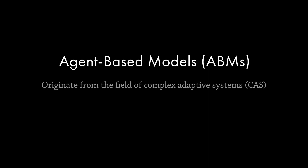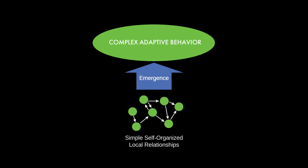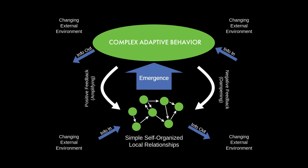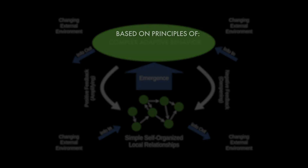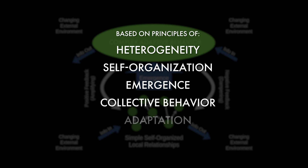The agent-based approach originates from the field of complex system science, and specifically the study of complex adaptive systems. At the core of this approach is the conceptualization of complex systems as the emergent result of many interactions among the systems of lower-level components. Five key principles guide our understanding of how lower-level interactions create higher-level systems: heterogeneity, self-organization, emergence, collective behavior, and adaptation. Let's take a moment to explore each of these key ideas in more depth.